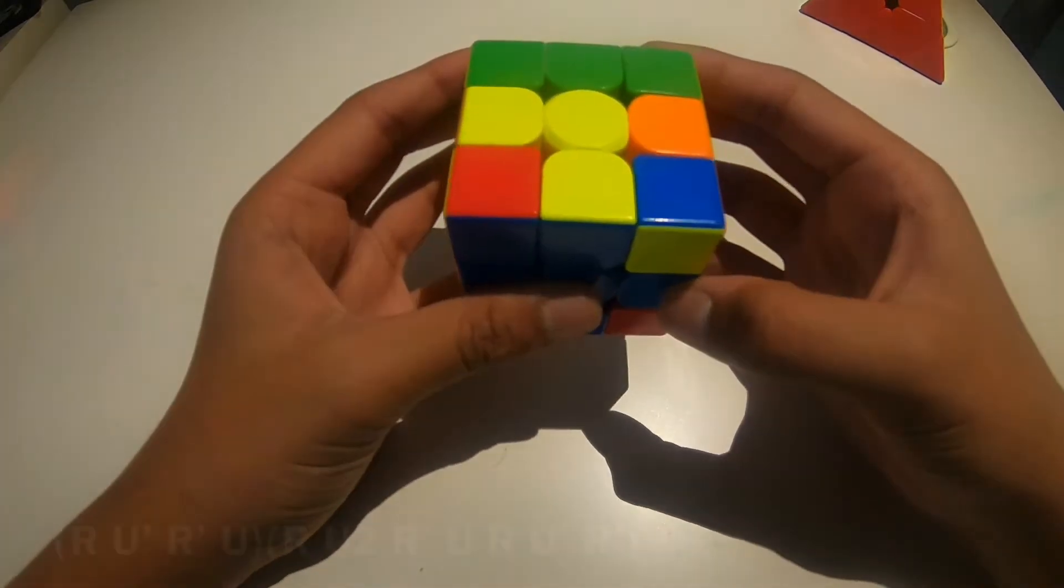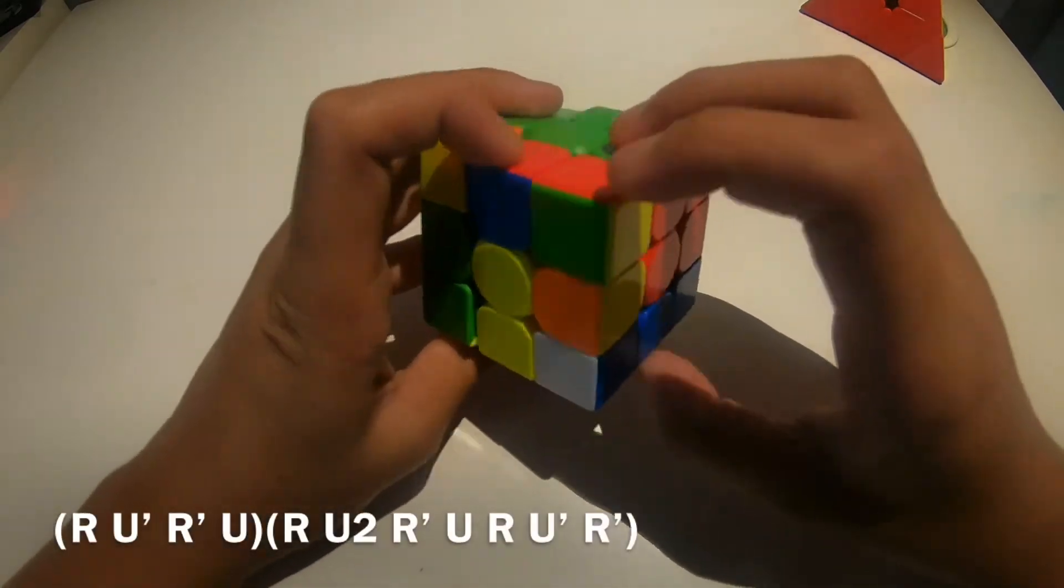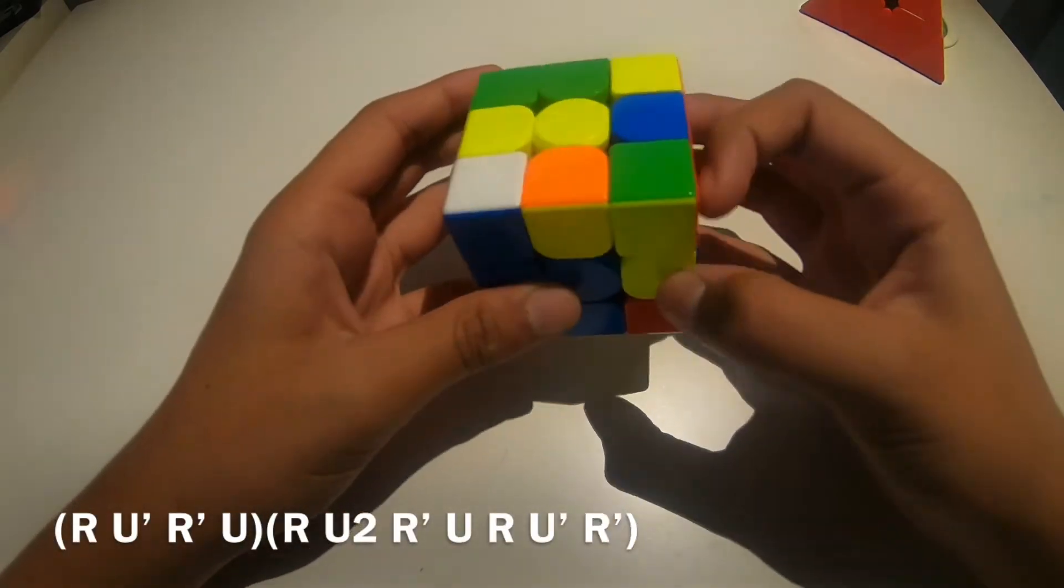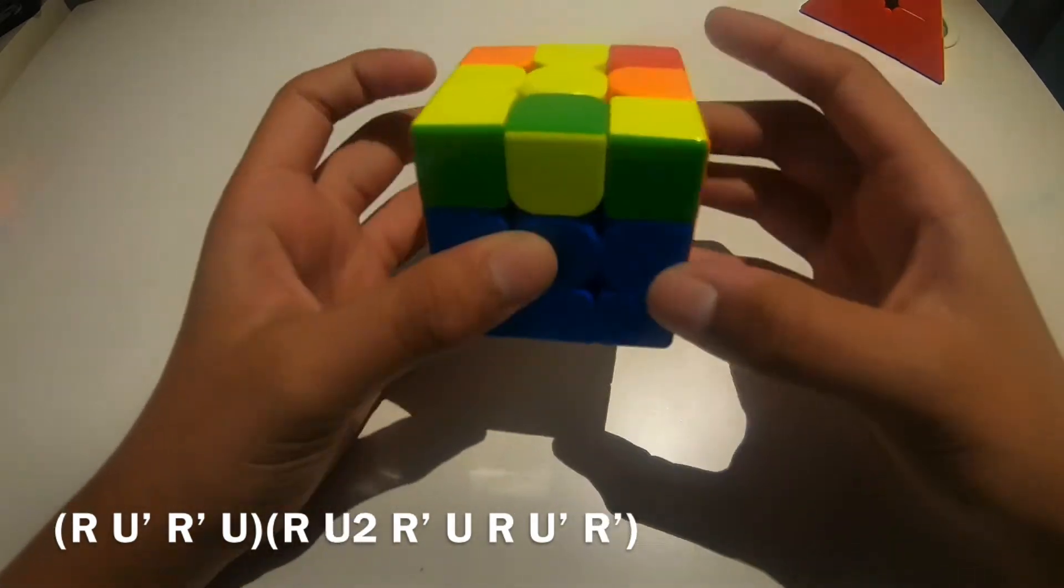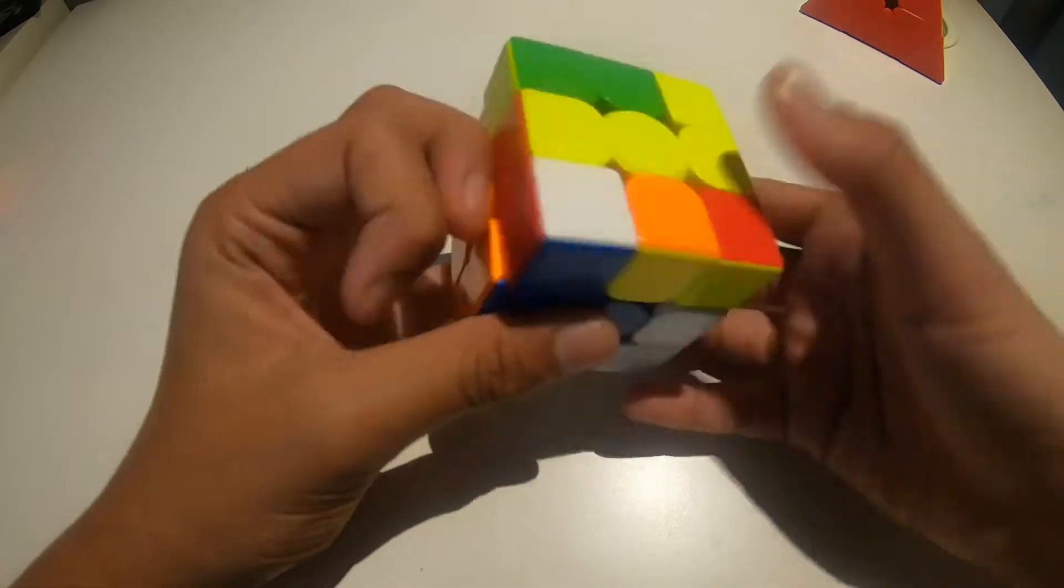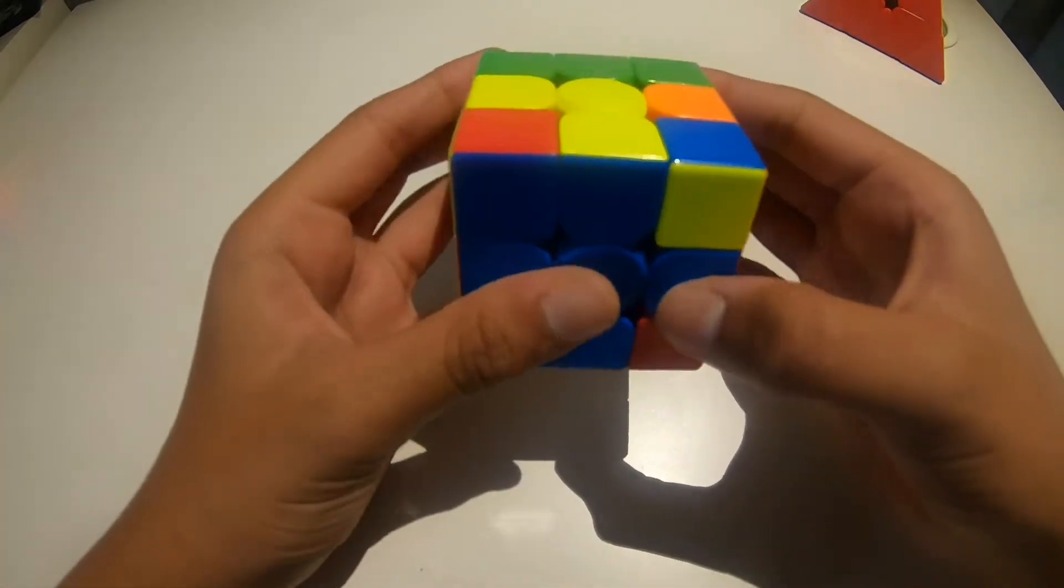So the first way is to split them up with R U' R'. Then you get this case, which basically you can do a U and then do R U R' U R' R'. So, a bit faster, it looks like this.